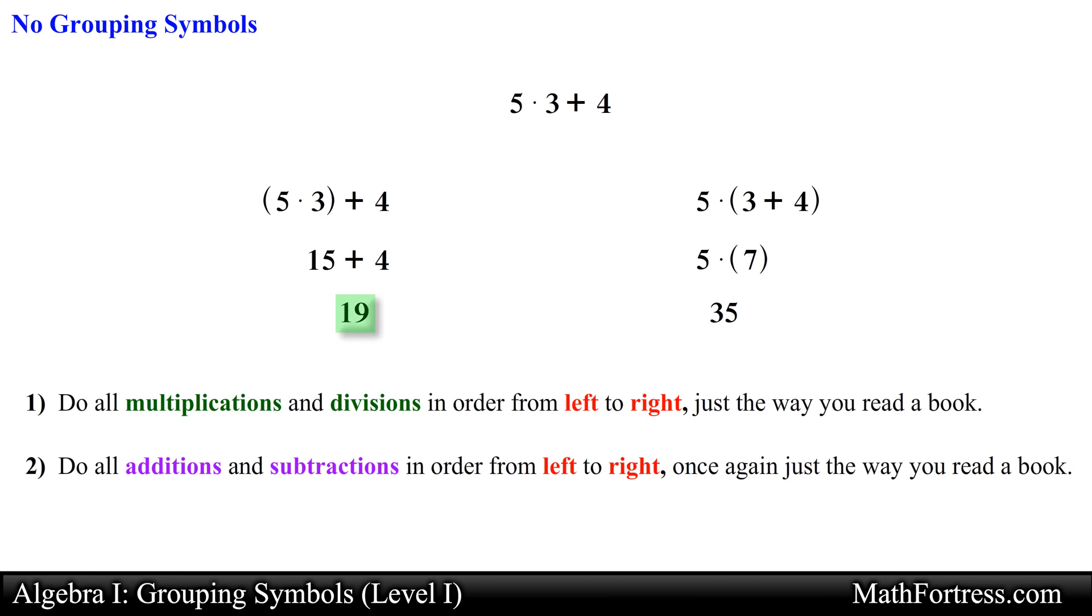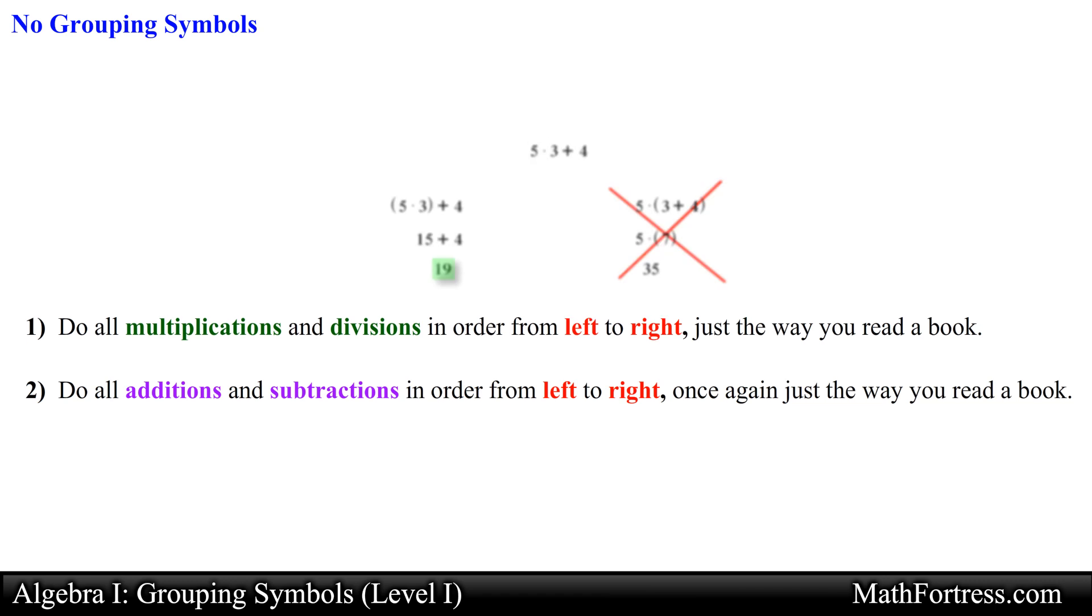Following these rules, we see that the first student is on the money. The answer to the previous expression simplifies to 19. Let's use these rules to simplify the following expression without grouping symbols.